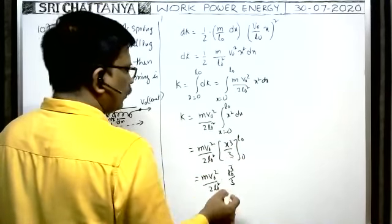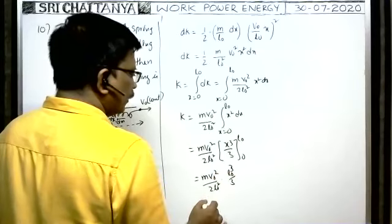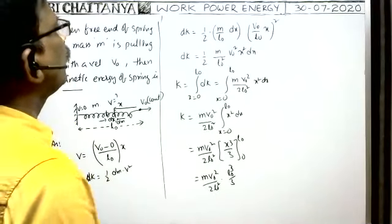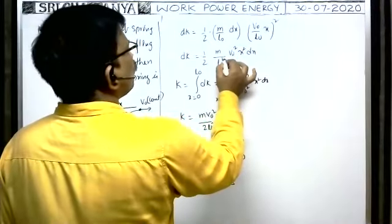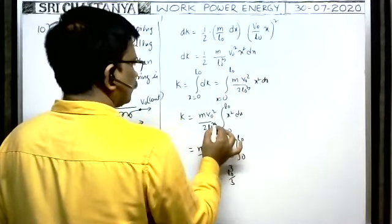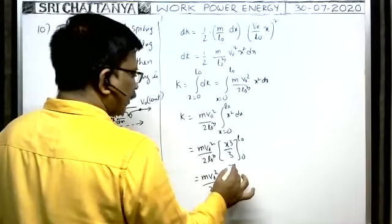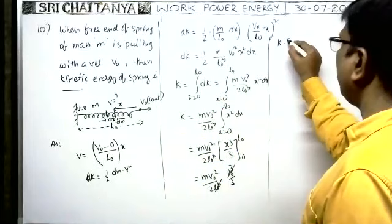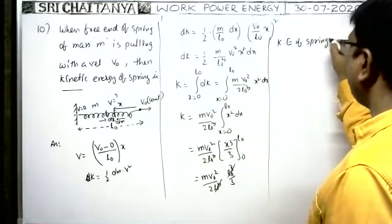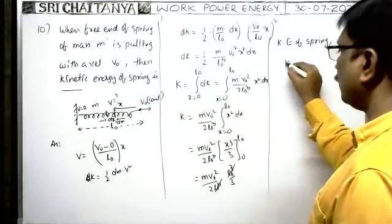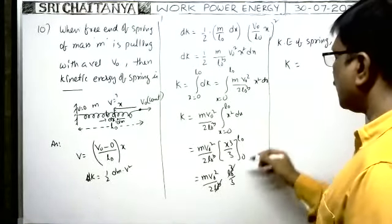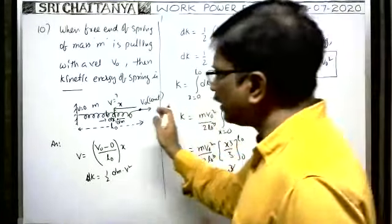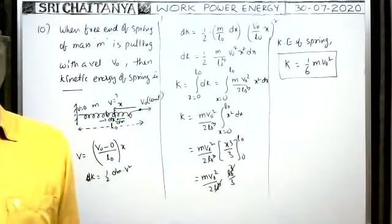L0 squared and L0 cubed: the L0 terms cancel, leaving KE = M·V0² / 6. Therefore, the kinetic energy of the entire spring when the free end moves with velocity V0 is equal to (1/6)M·V0².